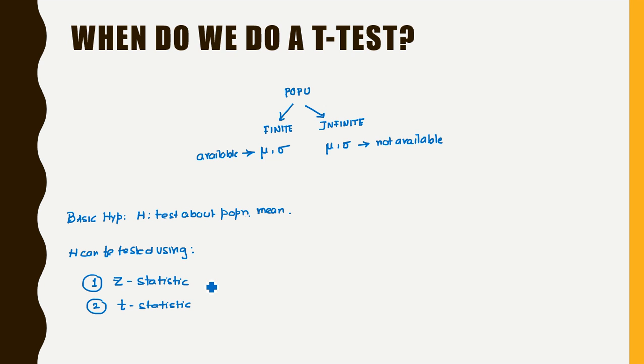Now this Z statistic can be obtained only if the population standard deviation sigma is known. However, if the population standard deviation sigma is not known, we need to estimate sigma. The estimate is given by sigma cap. Replacing sigma by sigma cap in Z statistic is what gives us the T statistic. So T statistic is used to test about the population mean if sigma is unknown.